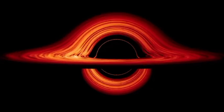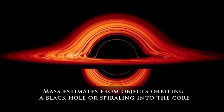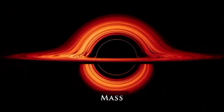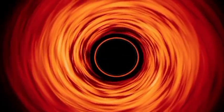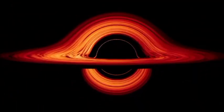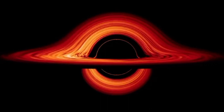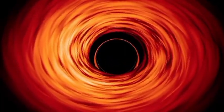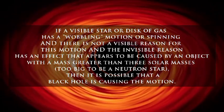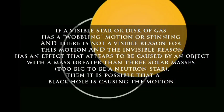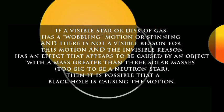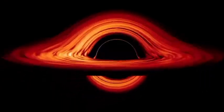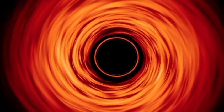The following effects may be used to detect black holes: mass estimates from objects orbiting a black hole or spiraling into the core, gravitational lens effects, and emitted radiation. Many black holes have objects around them, and by looking at the behavior of those objects you can detect the presence of a black hole. What you look for is a star or a disk of gas behaving as though there were a large mass nearby. For example, if a visible star or disk of gas has a wobbling or spinning motion and there is no visible reason for it, and the invisible cause appears to be an object with a mass greater than three solar masses — too big to be a neutron star — then it is possible that a black hole is causing the motion. You then estimate the mass of the black hole by looking at the effect it has on the visible object.